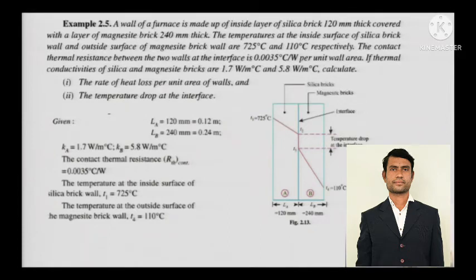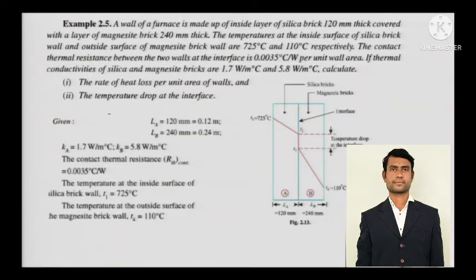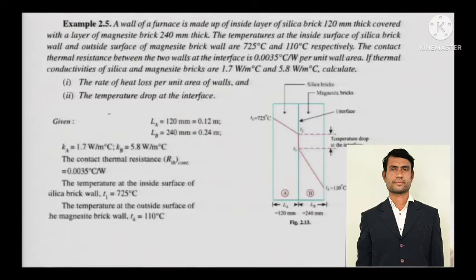The next problem: a wall of a furnace is made up of an inside layer of silica brick 120 mm thick covered with a layer of magnesite brick 240 mm thick. The temperature of the inside surface of the silica brick wall is 725 degree Celsius and the outside surface of the magnesite brick wall is 110 degree Celsius. The contact thermal resistance between the two walls at the interface is 0.0035 degree Celsius per watt per unit wall area. Thermal conductivities of silica and magnesite bricks are 1.7 and 5.8 watts per meter degree Celsius. Calculate the rate of heat loss per unit area and temperature drop at the interface.